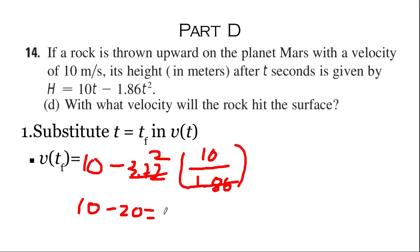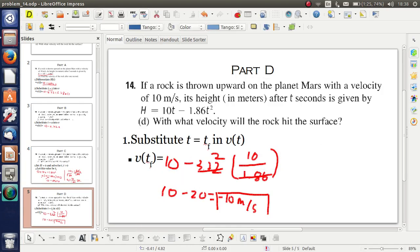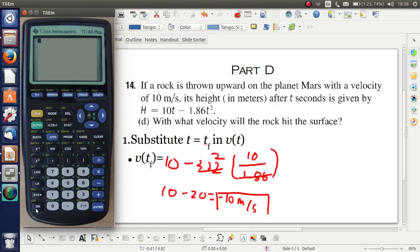And that equals negative 10 meters per second. That's the final velocity of the rock when it hits the surface. We can verify all these steps by looking into the calculator here. I have graphed the function here: 10x minus 1.86x squared.